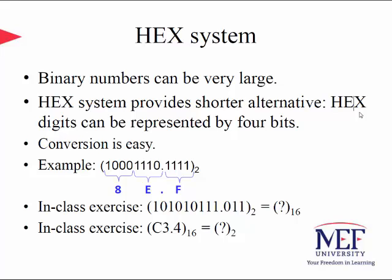The hexadecimal number system is as popular as the binary number system due to its shorthand notation and easy binary conversion rules. Most computer manuals use either octal or hexadecimal numbers to specify binary quantities, mainly because binary numbers can be quite large. Hexadecimal digits can be represented by four bits, and conversion is quite straightforward. For example, one-zero-zero-zero is represented by eight — you group four bits at a time and convert them to hexadecimal through a simple conversion table.